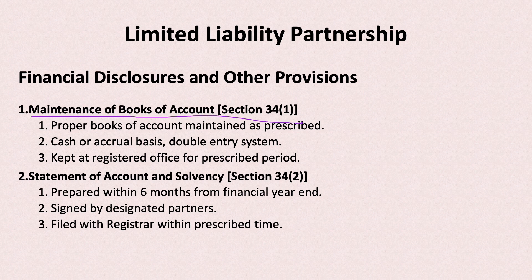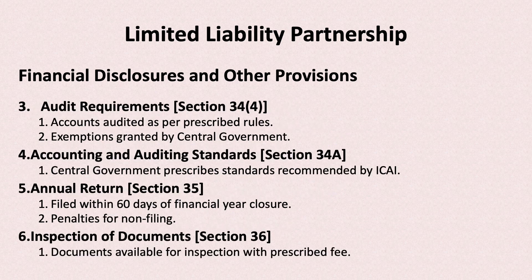The LLP Act requires books of accounts to be maintained using cash and double-entry systems. Under Section 34, a solvency statement must be filed within 6 months by designated partners. Accounts must be audited according to government rules, with some government exemptions available. Accounting standards are set by the central government. Annual return and financial year disclosures must be filed with the Registrar, and failure to file attracts penalties.